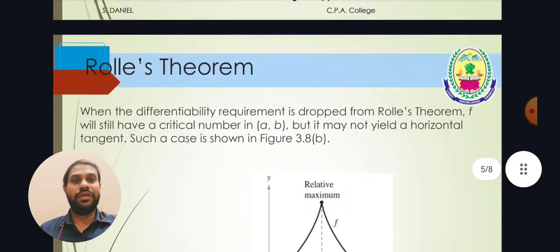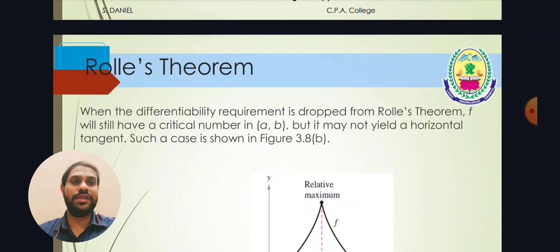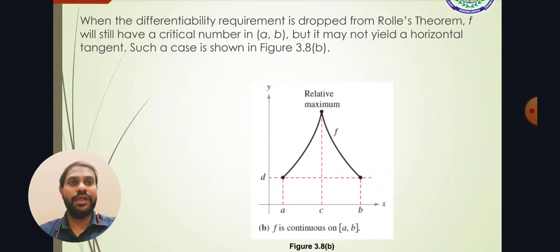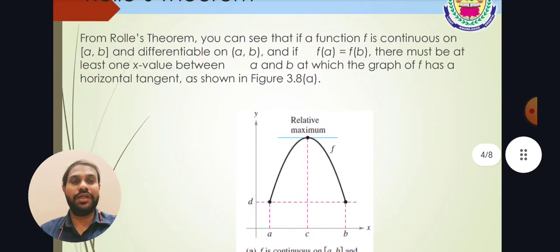Now consider the converse case: if we lose the differentiability requirement from Rolle's theorem, f is still continuous and there exists a critical point, but it will not yield a horizontal tangent. A tangent exists when a straight line intersects a curve surface. If we drop the differentiability condition, the smoothness of the curve is lost. The graph will look like an angular shape rather than a smooth curve, and without a smooth curvature we cannot draw a tangent. So the theorem fails. The necessary and sufficient conditions are both continuity and differentiability; if f(a) = f(b) under those conditions, we can find the point c.